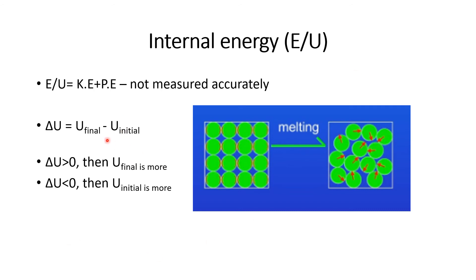If the final value is more — for example, final value is 10 and initial value is 9 — then 10 minus 9 equals 1, which is greater than 0. So delta U is greater than 0, meaning the final value is more. If the initial value is more — initial value is 10 and final value is 9 — then 9 minus 10 equals minus 1. So delta U is less than 0, meaning the initial value is more.